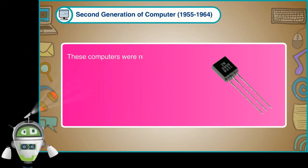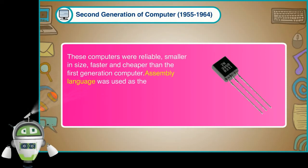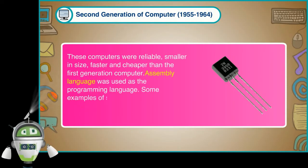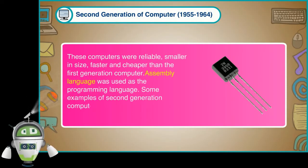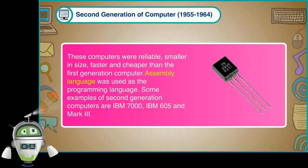These computers were reliable, smaller in size, faster and cheaper than the first generation computer. The assembly language was used as the programming language. Some examples of second generation computers are IBM 7000, IBM 605 and Mark III.